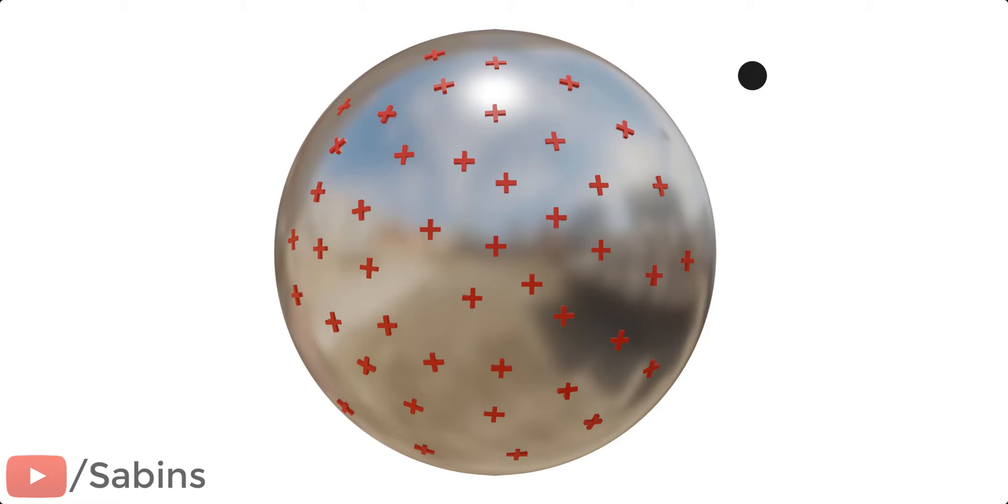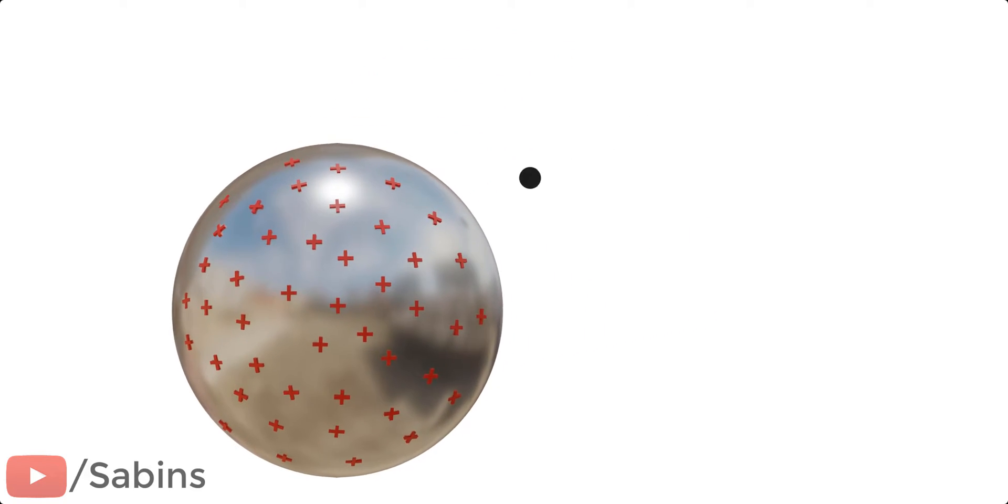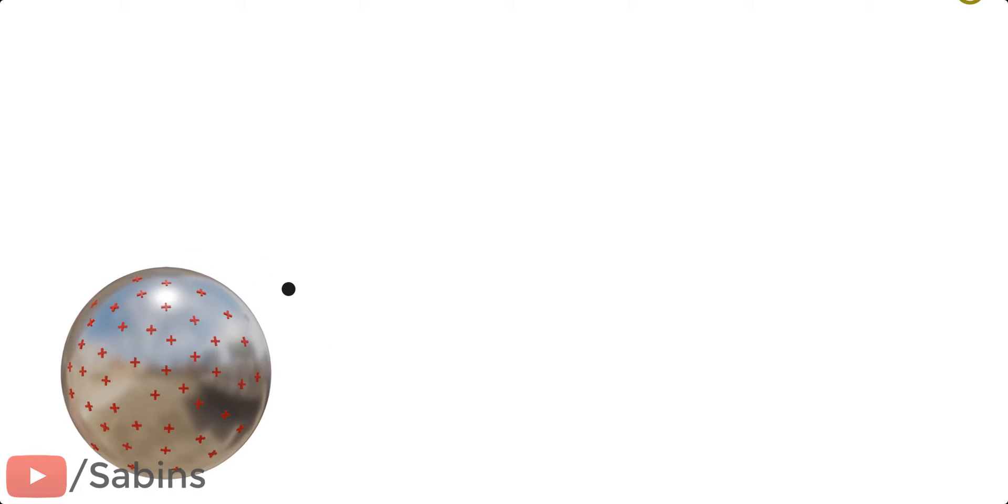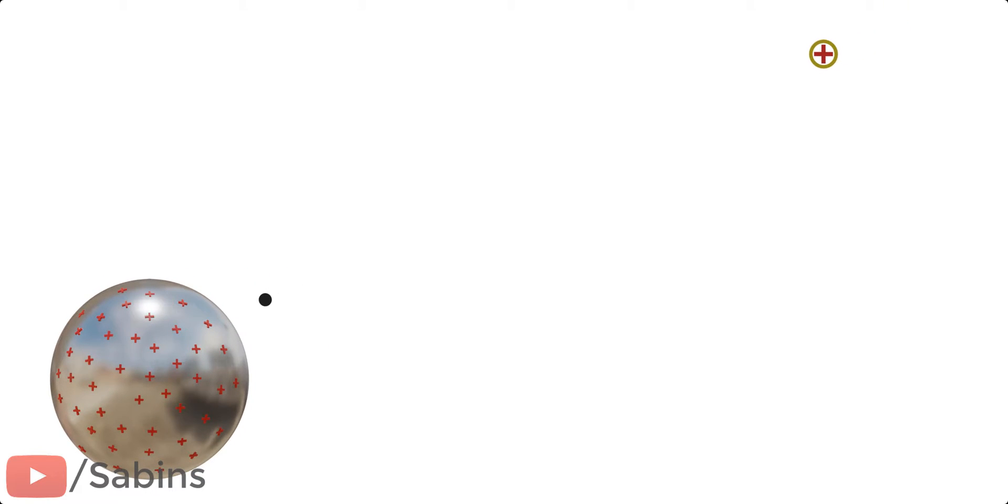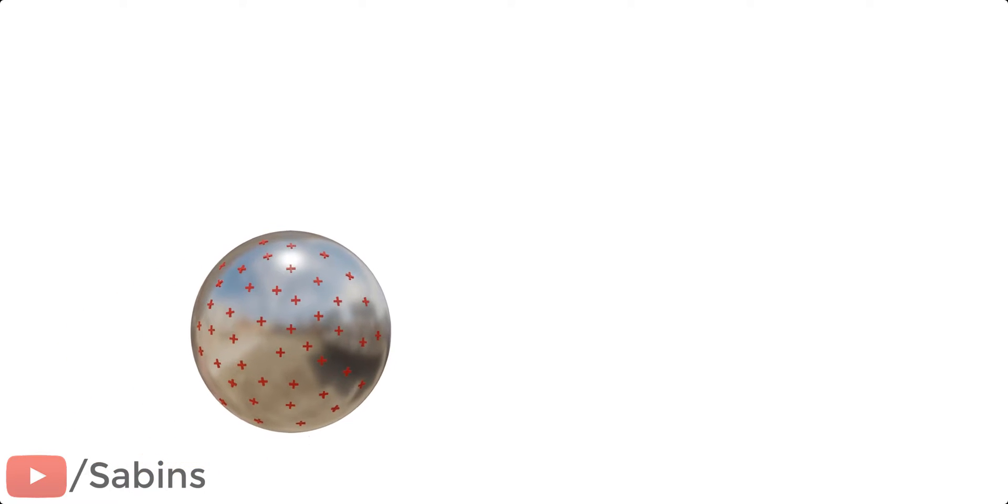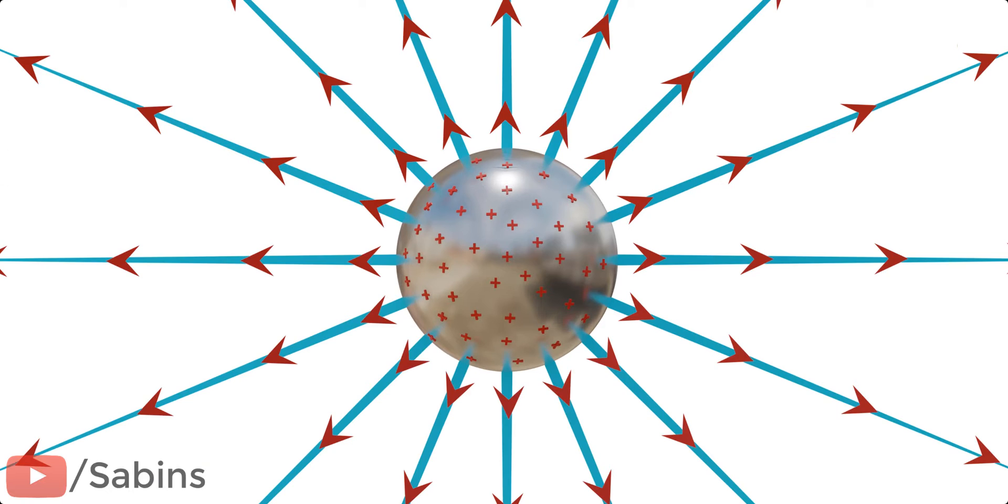Consider a steel ball with some positive charges on its surface. Now let's find out the electric potential at some point near the ball. Electric potential, at any point, is the energy required to bring a unit test charge from the infinity to that point. The charged steel ball produces an electric field around it, as shown. The strength of this electric field is quite high near to the ball and becomes negligible as we move far away from it.